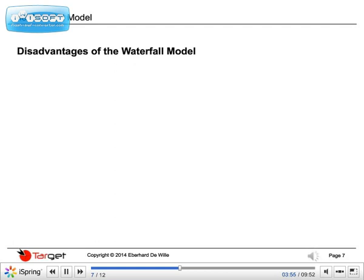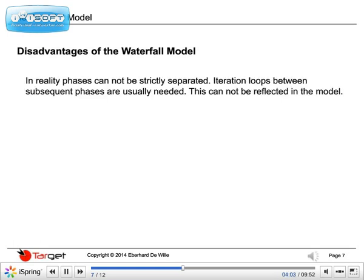However, there are also a lot of disadvantages of this product life cycle. The disadvantage of the waterfall model is that in real life phases cannot be strictly separated. Phases may overlap and run in parallel for a certain time. Iteration loops between subsequent phases are usually needed, and there may be even a need for iteration loops jumping back over one or two phases. This cannot be reflected in the model.